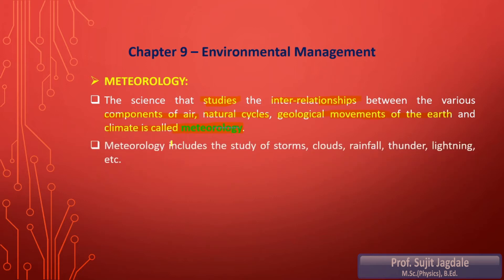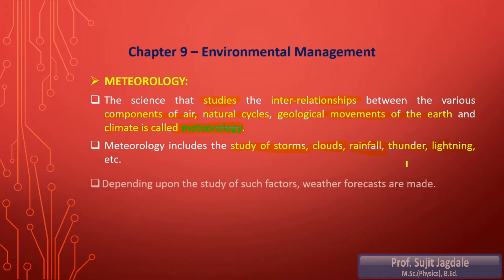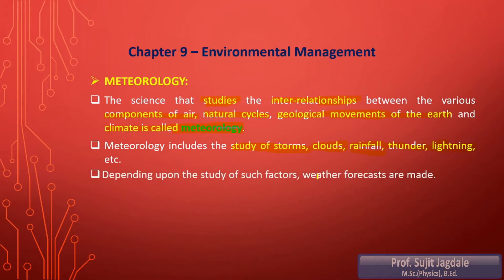Meteorology also includes the study of storms, clouds, rainfall, thunder, and lightning. All these are actually part of climate — they depend on climate. So when considering meteorology in the context of climate, it includes the study of storms, clouds, rainfall, thunder, lightning, etc.